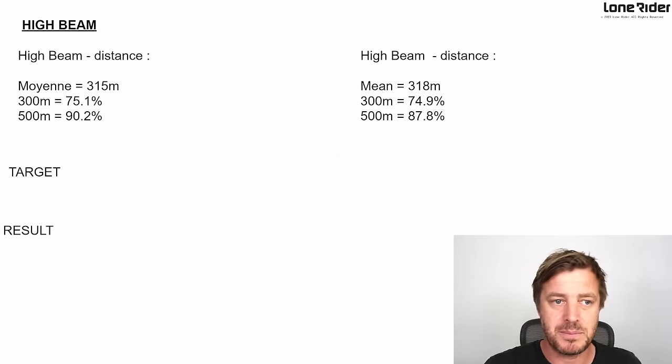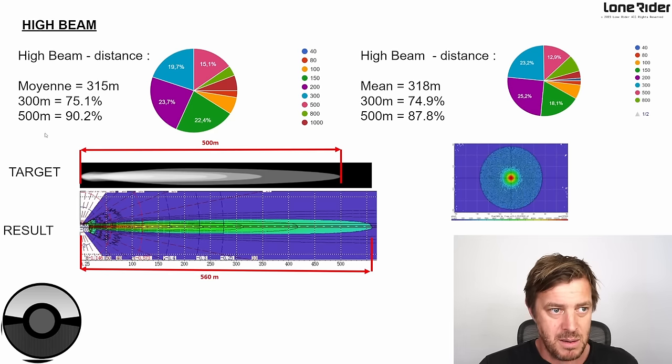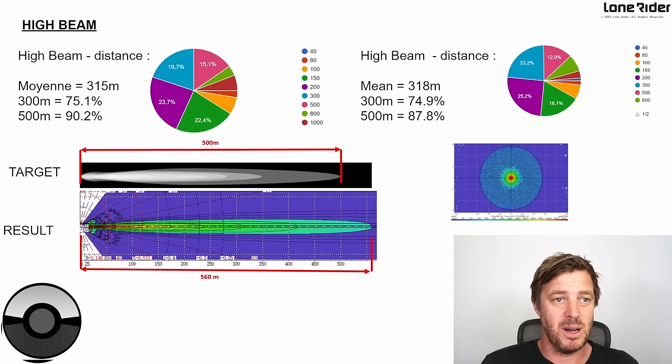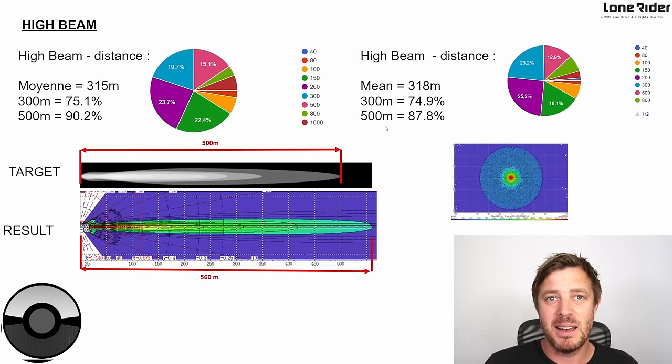For the high beam, that's another story. The medium is 315 meters from what the French customers wanted, and it's pretty much exactly the same for the international as well. We can't make everybody happy but we can try and make as many people happy as possible. If we aim for 500 meters, then we get almost 90% of people are happy. So that was our target - 500 meters to get you guys happy.